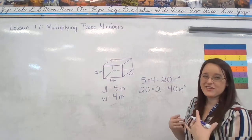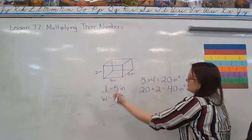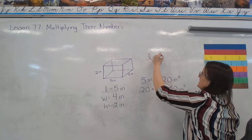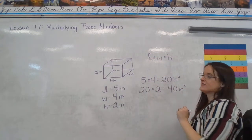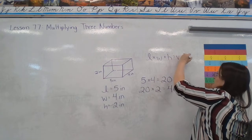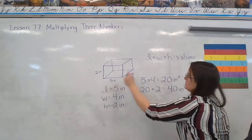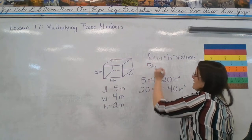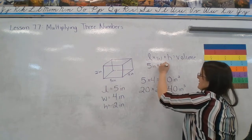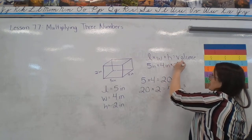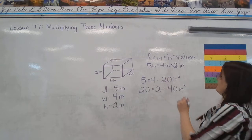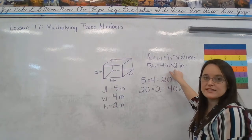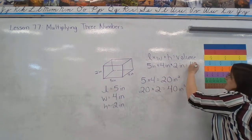So kind of the quicker way to write this is just to do, let me put height down here too, 2 inches. Just to do length times width times height is going to give us volume. So in this instance, we would do 5 inch length. And actually I'm going to write the inches out as well. 5 inch length times 4 inch width times 2 inch height. And that gives me 5 times 4 is 20 times 2 is 40 inches.